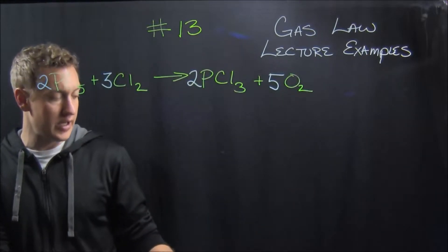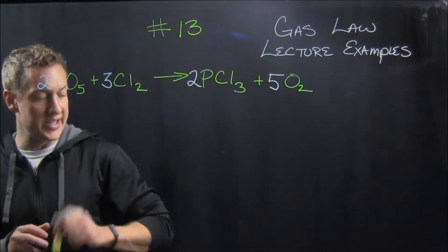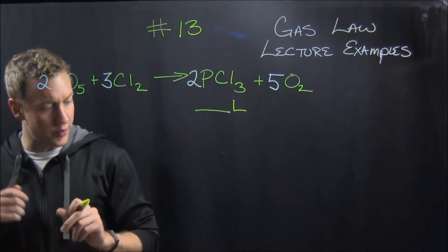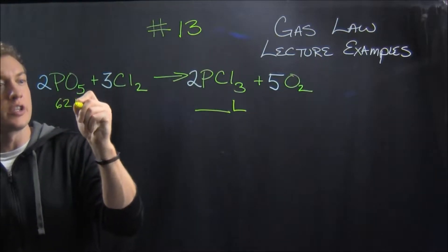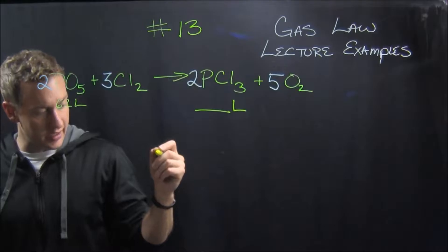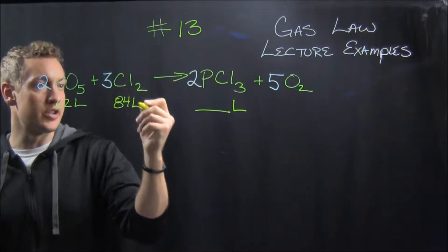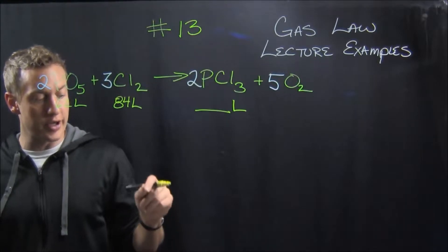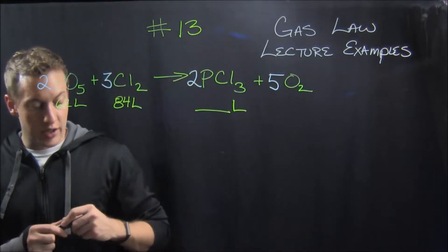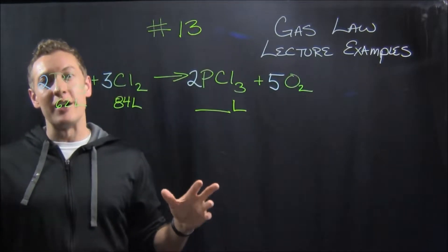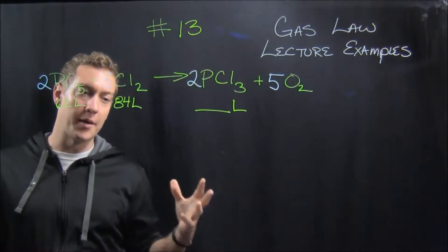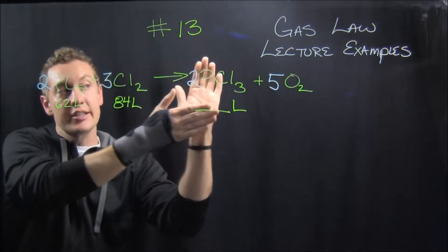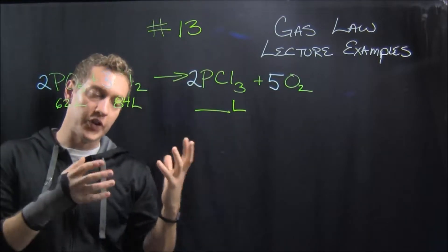And then we can get into the question itself. It says, how many liters of PCl3, so we're looking at liters of that guy, can be produced from the reaction of 62 liters, so 62 liters of PO5, and 84 liters of Cl2. At a constant 2 atmospheres and a temperature of 350 Kelvin. So hopefully you've been doing chemistry for a while, so this should read to you like a stoichiometry problem. They give us information about one substance, actually they give us information about two of these substances, ask us about another substance. So feels like a stoichiometry problem.